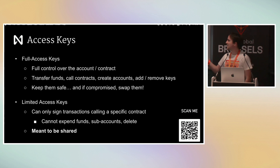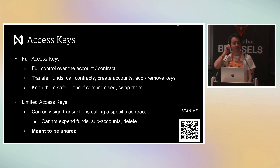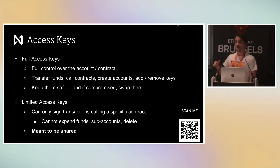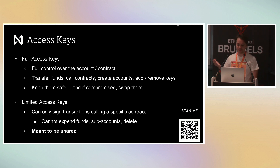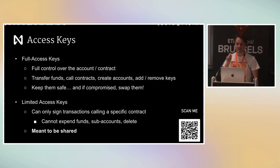This is the classic — keep them safe, because if something bad happens to them, it's really bad for you. But since you can have multiple keys, you can also just swap them. If you think one of your keys got compromised, you can just delete it and add another one. Then comes what is very interesting: the limited access keys, which are a special type of key that can only sign transactions calling a specific smart contract. They cannot spend funds, cannot create accounts, cannot add or remove keys, cannot delete your account — nothing. They just allow you to call specific methods on a specific smart contract.